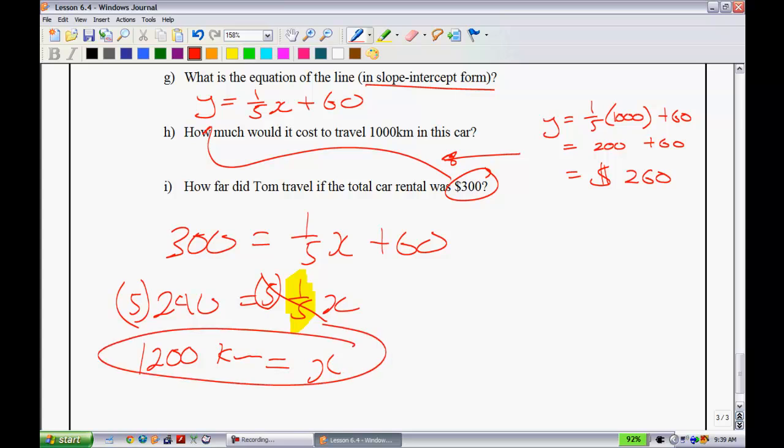So the big thing to know in this lesson is that the equation y equals mx plus b is known as the slope-intercept form. It's very useful because you can just start with the y-intercept and then apply your slope from that point. That concludes this lesson.